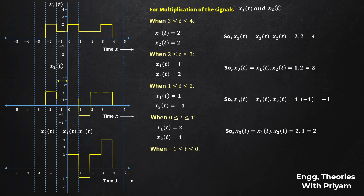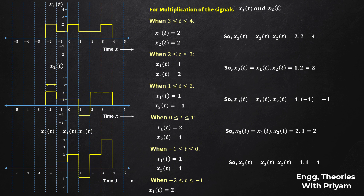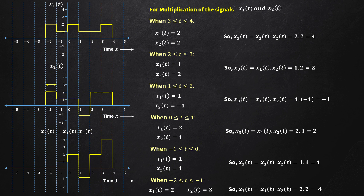When t is in [-1, 0], x1(t) = 1 and x2(t) = 1, so x3(t) = 1 × 1 = 1. Finally, when t is in [-2, -1], x1(t) = 2 and x2(t) = 2, so x3(t) = 2 × 2 = 4.